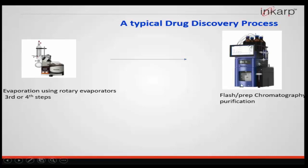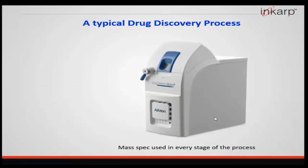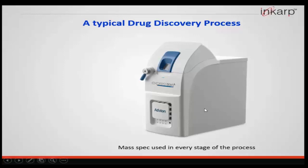At this stage you have the purified compounds. The next step is mass spec — a single-quad mass spec where you confirm the molecular weight of your sample. Mass spec is involved from the beginning of the experiment and at each and every stage. You confirm the molecular weight of starting materials, monitor reaction progress at each stage, check crude sample after reaction completion, and confirm molecular weights of fractions before combining them. Each and every stage involves mass spectrometers.